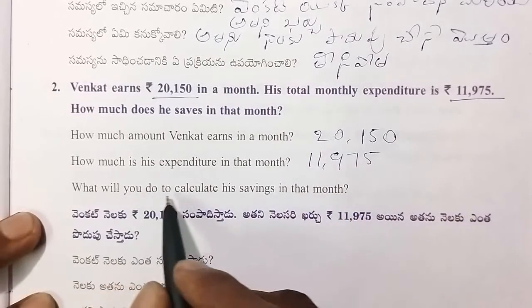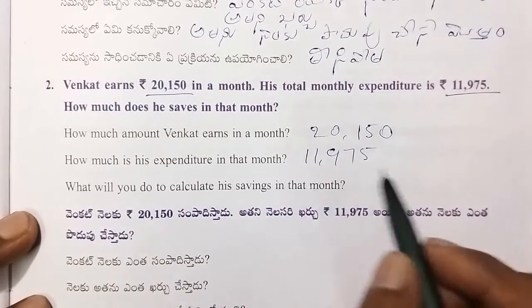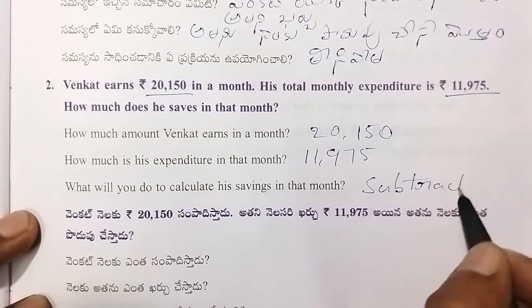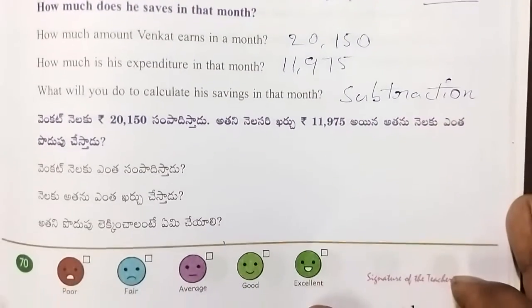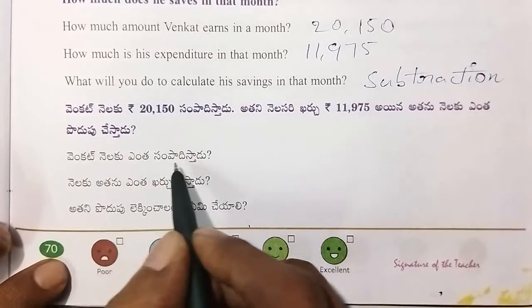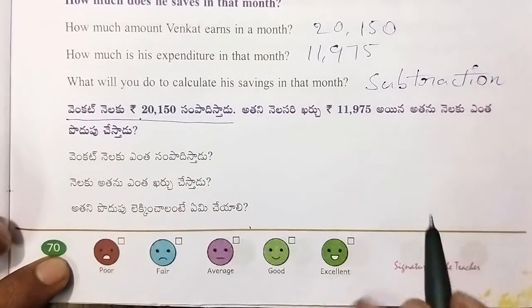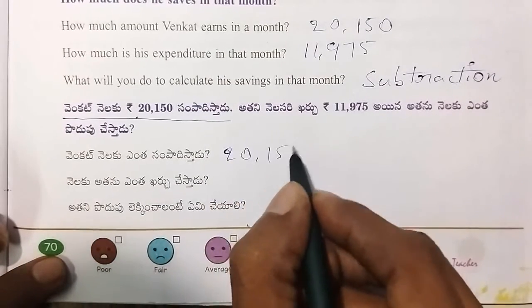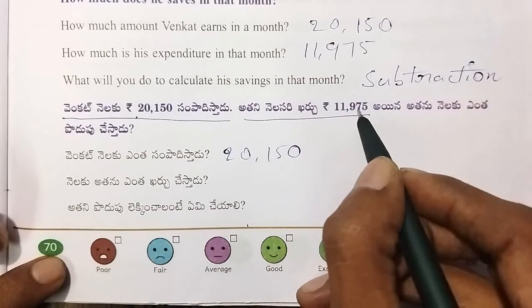Next. What will you do to calculate his saving in that month? Aanthapodup chasthada kandukali. The 4th step — nalaku eanthapodup chasthada kandukali. 19,1975.